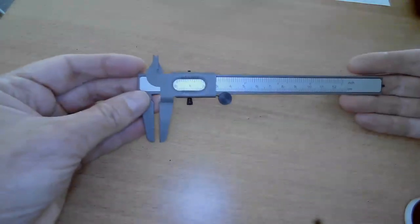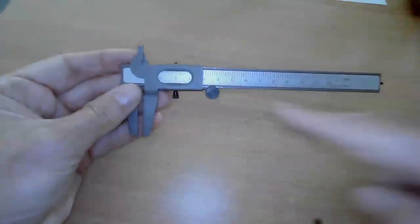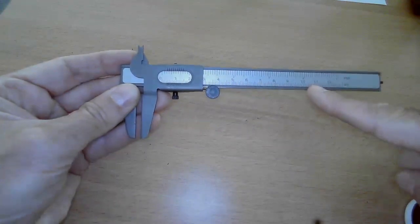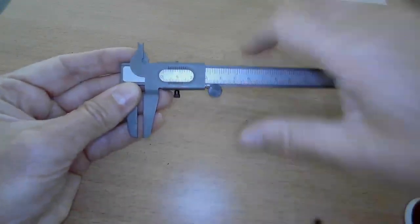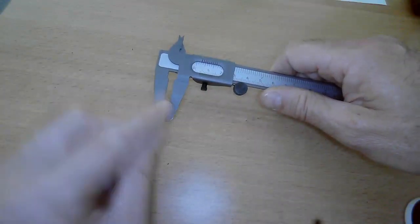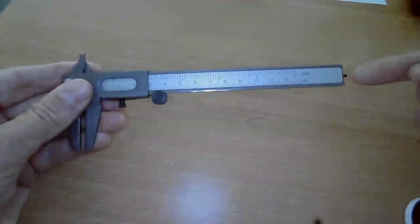Here is the vernier caliper. The main features are the main scale marked in centimeters, the vernier scale, the external jaws, the internal jaws,